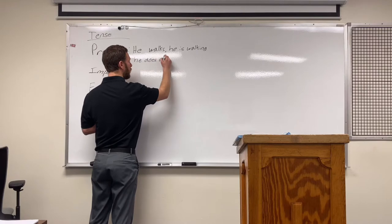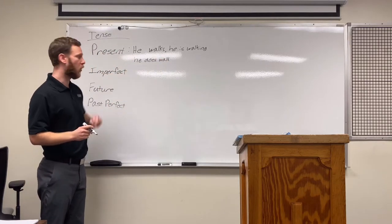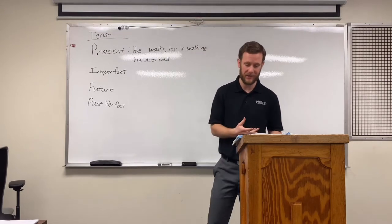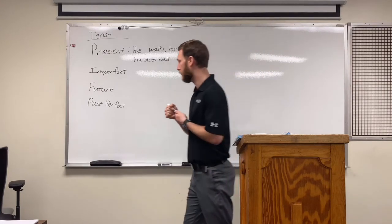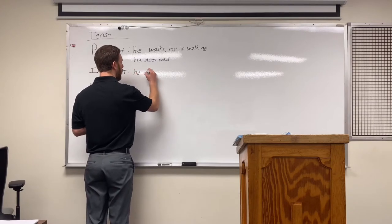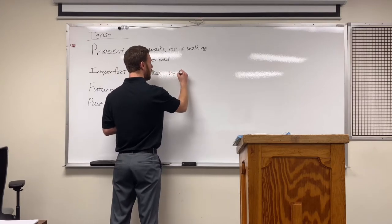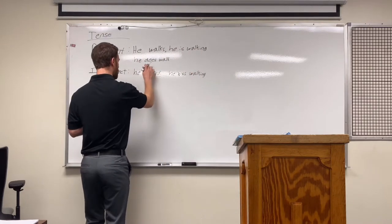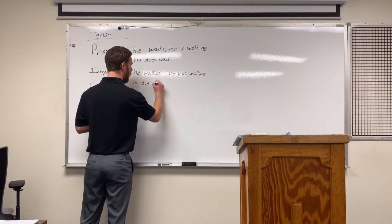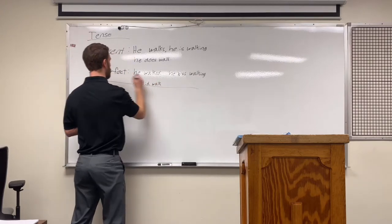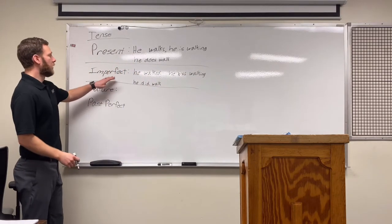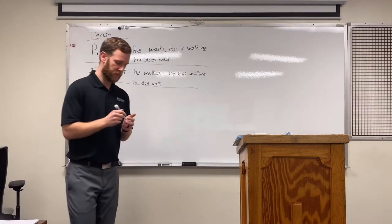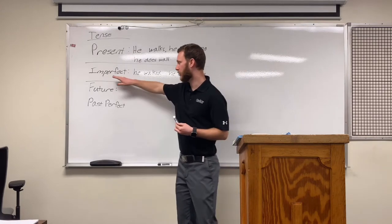For the imperfect — Latin doesn't technically have a past tense, but we use the imperfect in its place. It doesn't really solve all the issues, but it will work. So: he walked, he was walking, he did walk. Technically not exactly past perfect, but that's what we've got for Latin imperfect — it can mean things in the past. But past in English can mean more than just imperfect, and we'll get to that in a second.